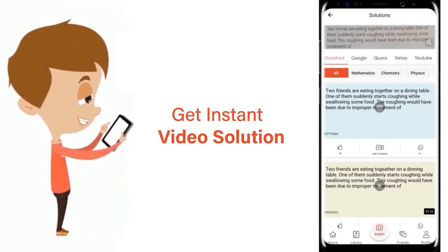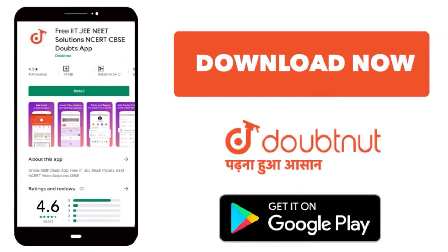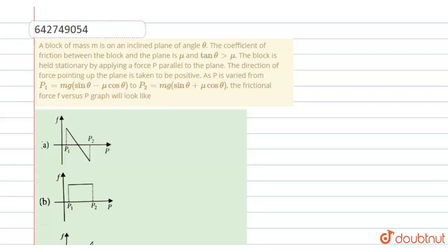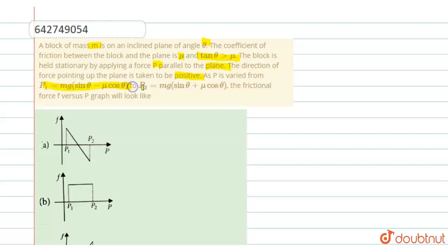Here is the question: a block of mass m is on an inclined plane of angle theta. The coefficient of friction between the block and the plane is mu, and tan theta is greater than mu. The block is held stationary by applying a force p parallel to the plane. The direction of the force pointing up the plane is taken as positive. p is varied from p1 = mg sine theta minus mu cos theta, to p2 = mg sine theta plus mu cos theta.